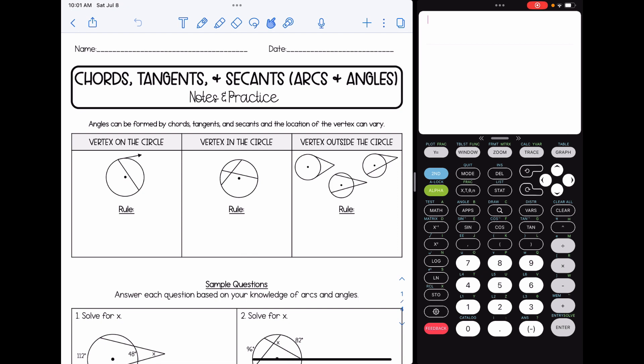Angles can be formed by chords, tangents, and secants, and the location of the vertex of the angle can vary. So we have three situations here. The vertex could be on the circle, the vertex could be in the circle, or the vertex could be outside the circle. So depending which scenario we have, there's a different rule on how to find the measure of that angle.